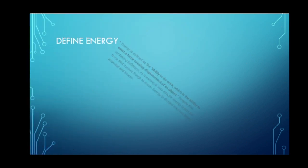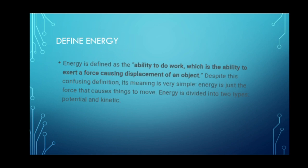Define energy. What is energy? Energy is defined as the ability to do work, which is the ability to exert a force causing displacement of an object. Despite this confusing definition, its meaning is very simple — energy is just the force that causes things to move. Energy is divided into two types: potential and kinetic.